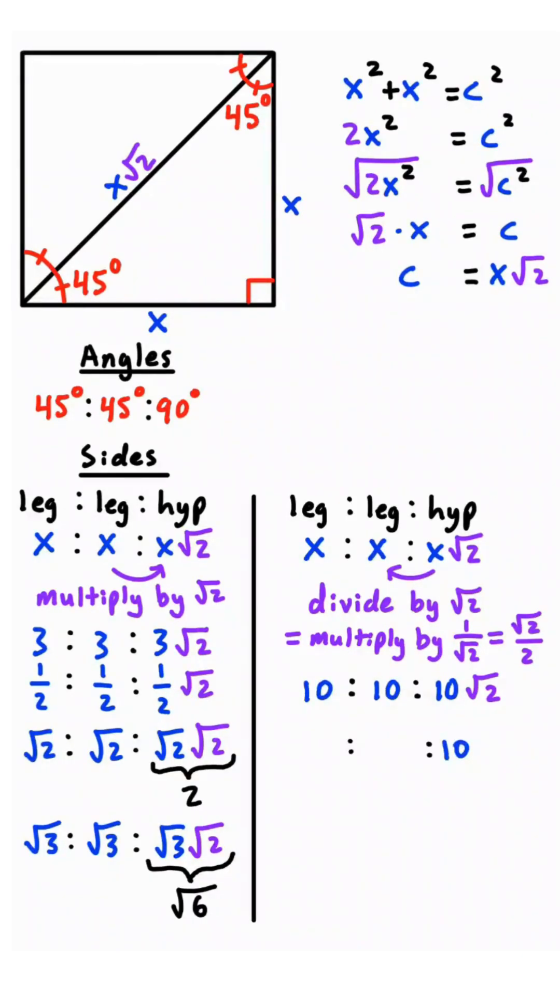Well, if the hypotenuse is 10, to get the other leg, we're going to multiply by root 2 over 2. So the other leg is going to be 10 times root 2 over 2, which simplifies to 5 root 2.